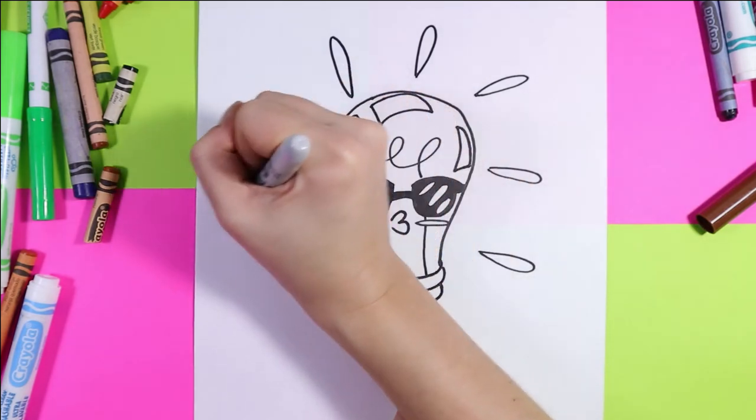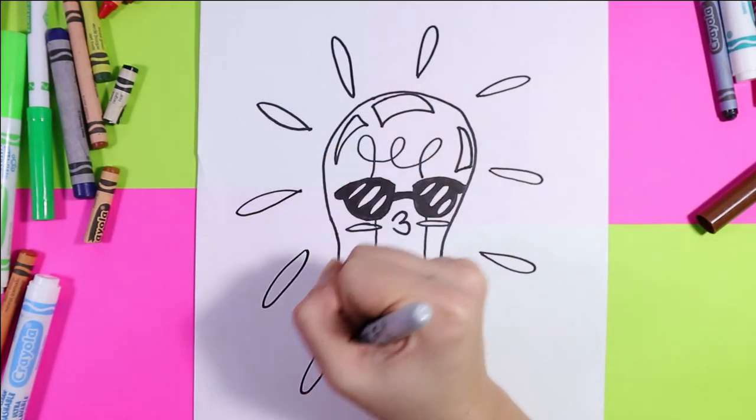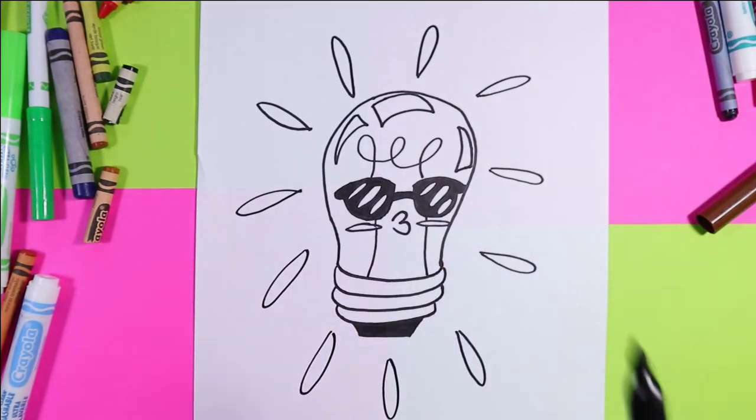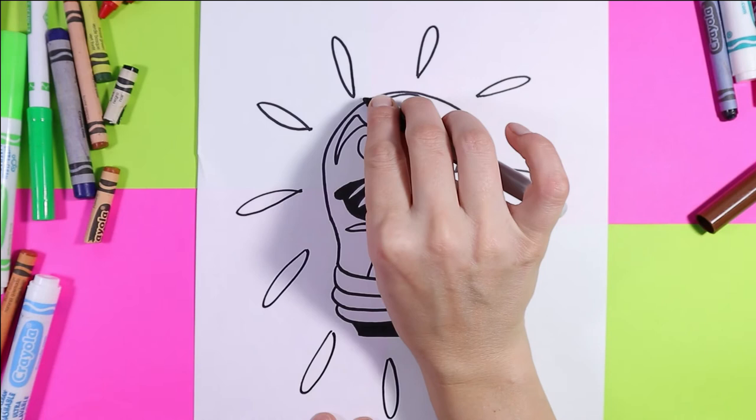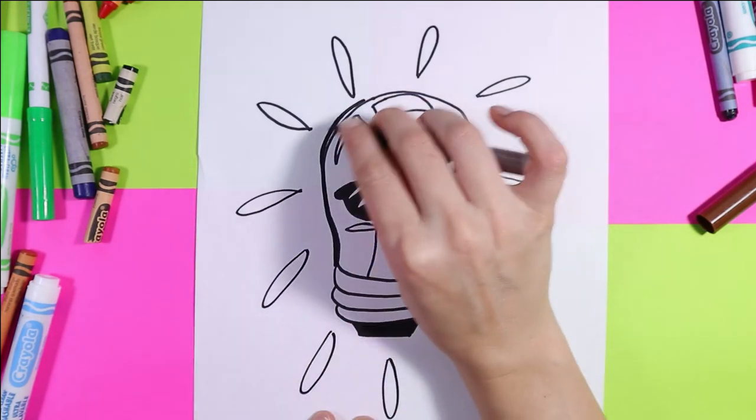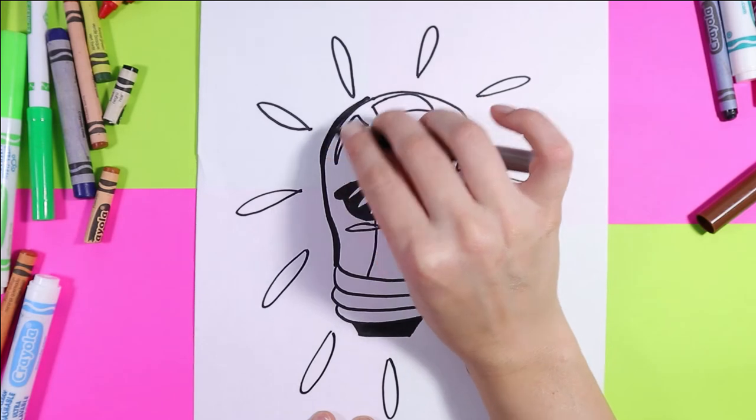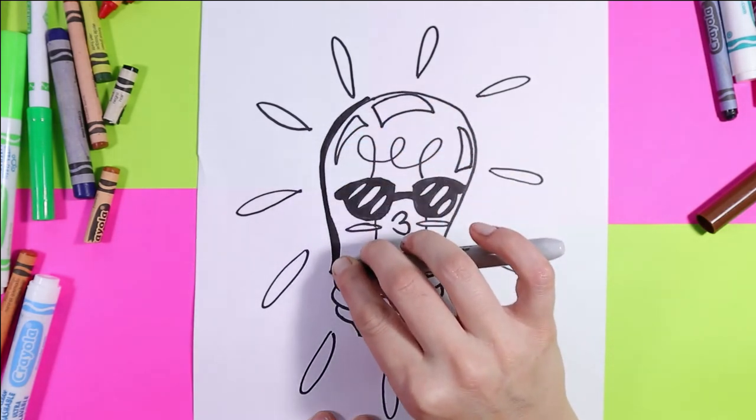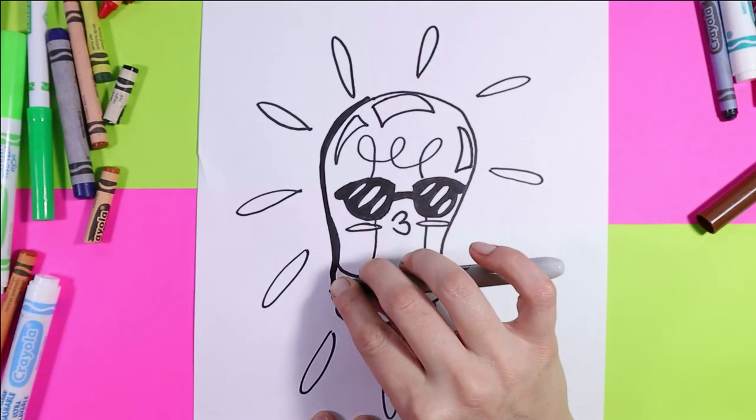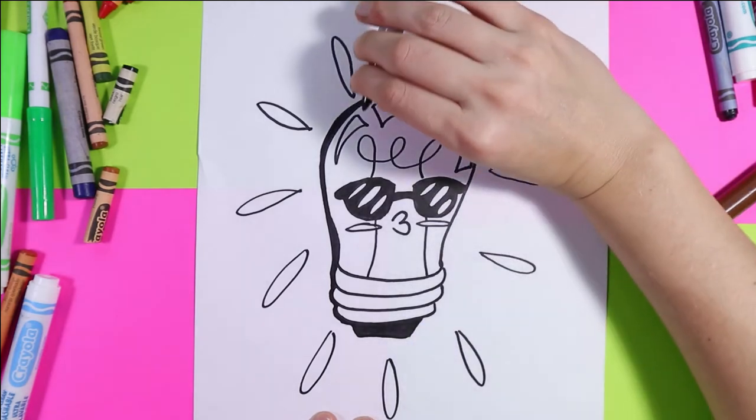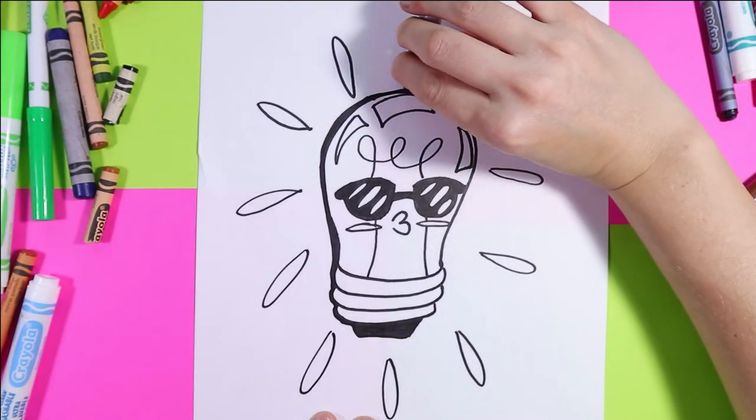Perfect! And before we color it, we're gonna go around your light bulb one more time with your mark making medium, just to thicken up those lines. Black felts work wonders for this. This will tidy it all up.